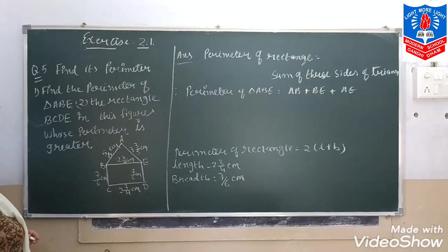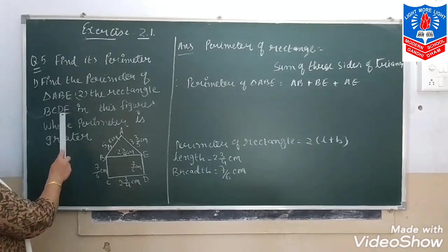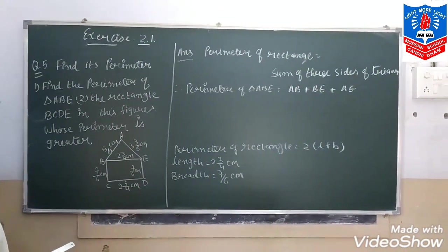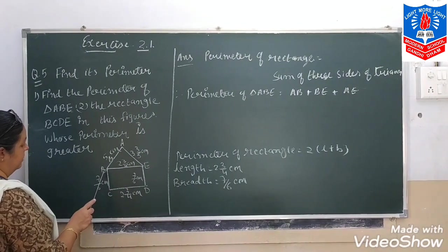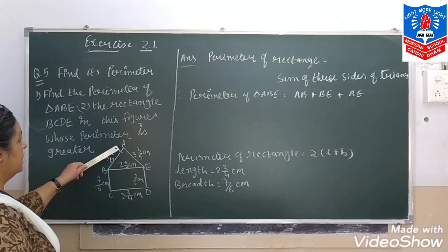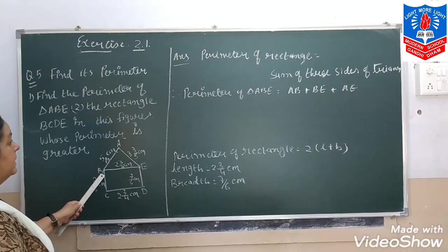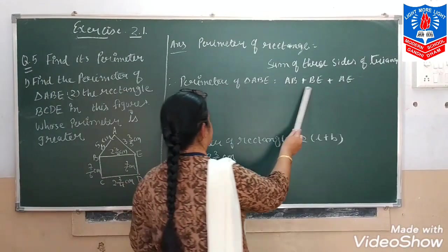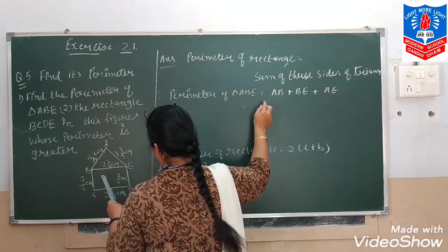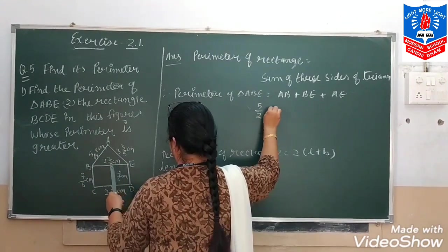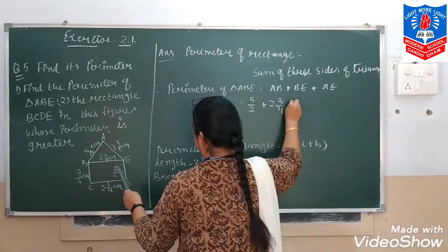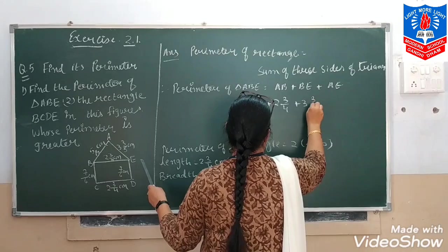Exercise 2.1, fifth portion: find the perimeter of triangle ABE and rectangle BCDE. Find which perimeter is greater. Perimeter of triangle ABE is the sum of the three sides: AB plus BE plus AE. AB is equal to 5 upon 2, BE is equal to 2 integers 3 by 4, and AE is equal to 3 integers 3 by 5.